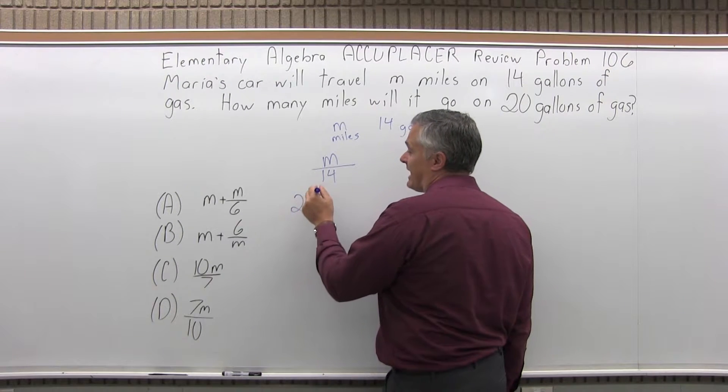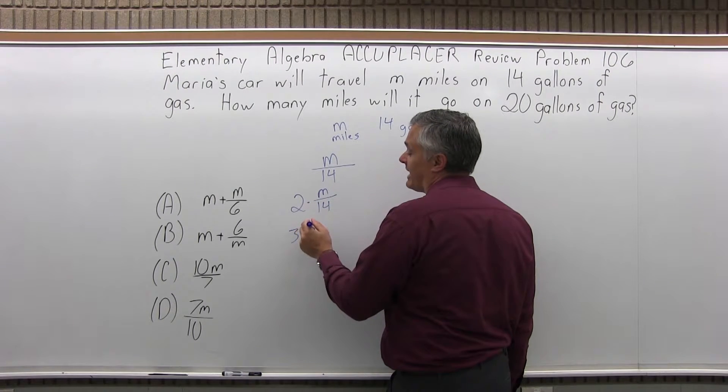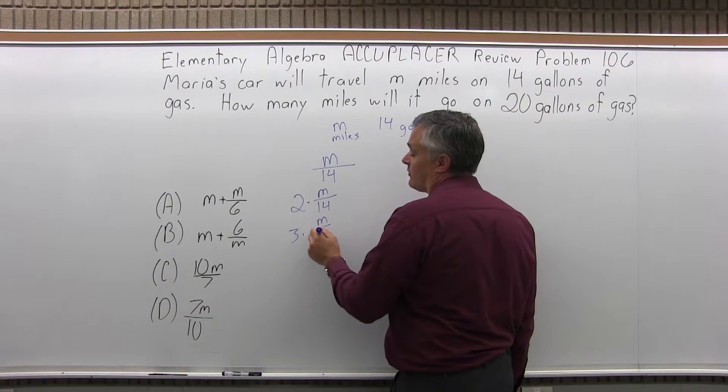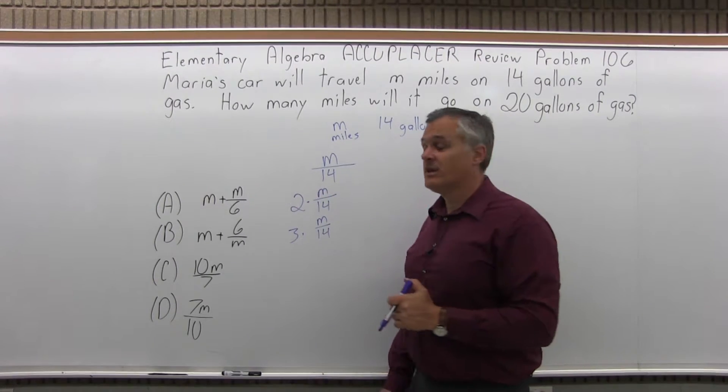With two gallons of gas, it would be two times M over 14. With three gallons of gas, three times M over 14. So it's the number of gallons times the miles per gallon. It will tell you how far you can go.